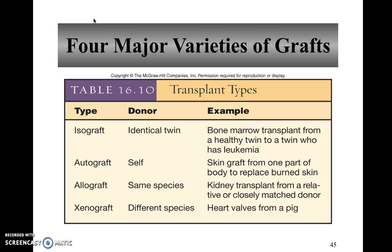As you know, we all have different blood types, and that's one of the things they look at when determining whether they can transplant an organ from one person to another. The other thing they look at are the HLA antigens that we talked about in the autoimmune section of the last video. HLA antigens are proteins on our cells that tell our immune system 'I belong here, don't attack me.'